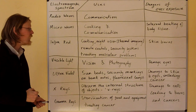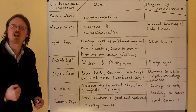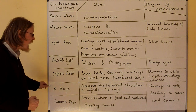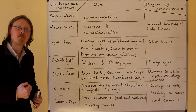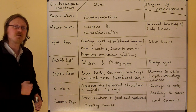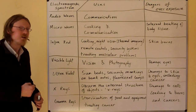Ultraviolet can damage the skin and the eyes, including giving you cancer. And X-rays and gamma rays, if you have too much of them, will damage your cells, leading to burns and cancers.